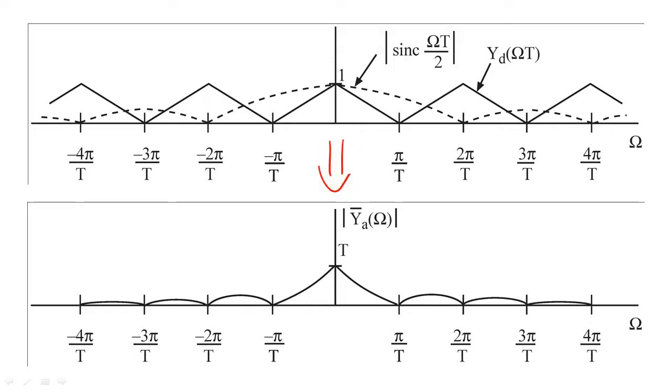To recreate y bar sub a of omega, we need to remove all frequency content beyond pi over t, and we need to undo the scaling caused by the sinc function between negative pi over t and pi over t.